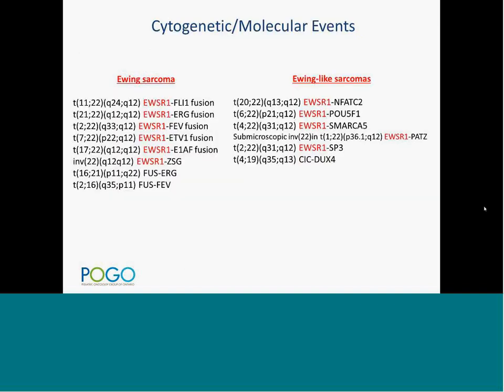In the recent decade, Ewing-like sarcomas have emerged as entities with molecular events similar to but distinct from classic Ewing sarcoma. Most have EWSR1 rearrangements and will be caught on standard testing. It is not yet settled whether they represent an expanded Ewing spectrum or distinct tumors. Currently, oncologists treat them with the Ewing sarcoma protocol.